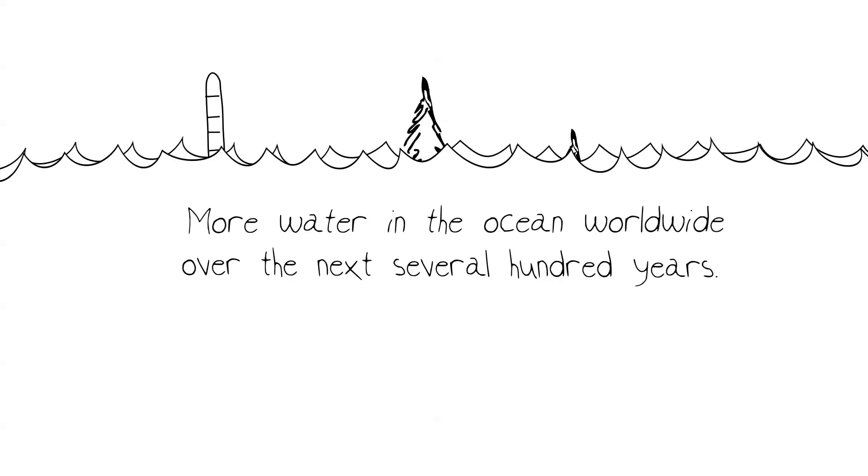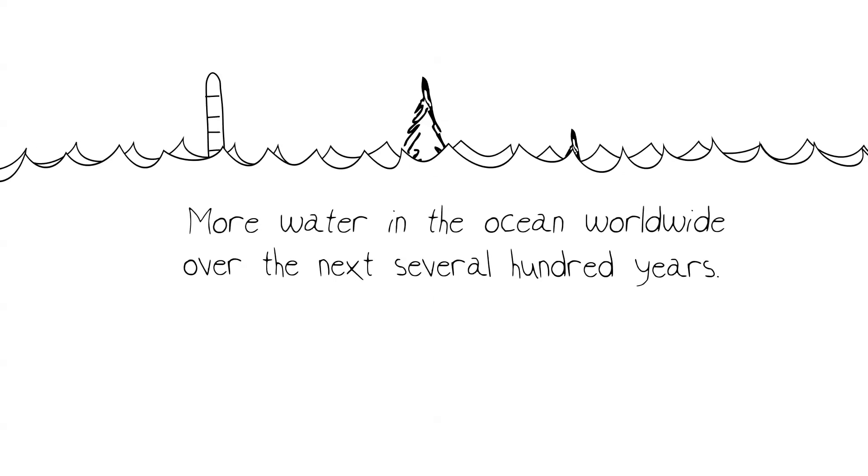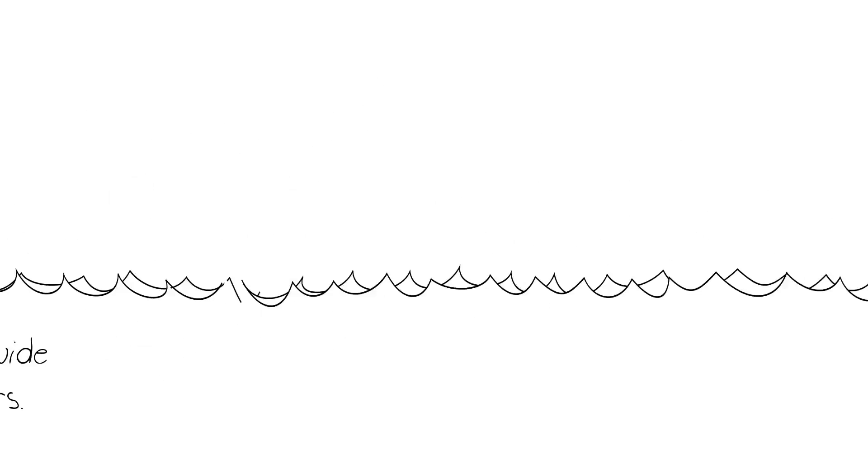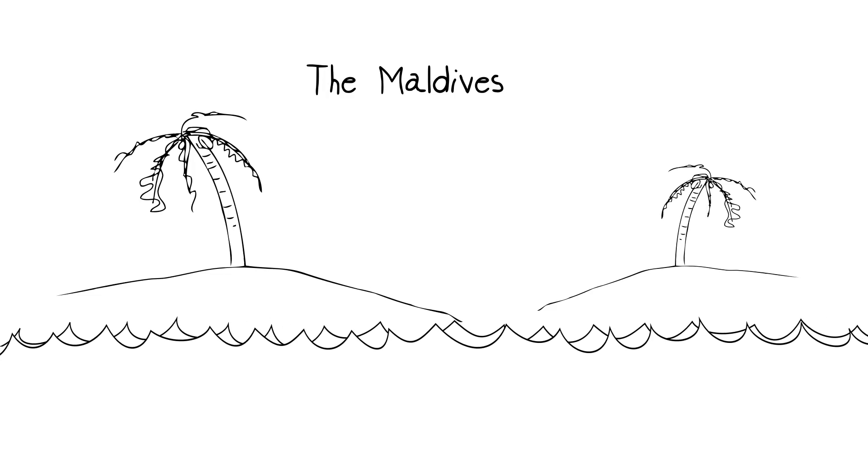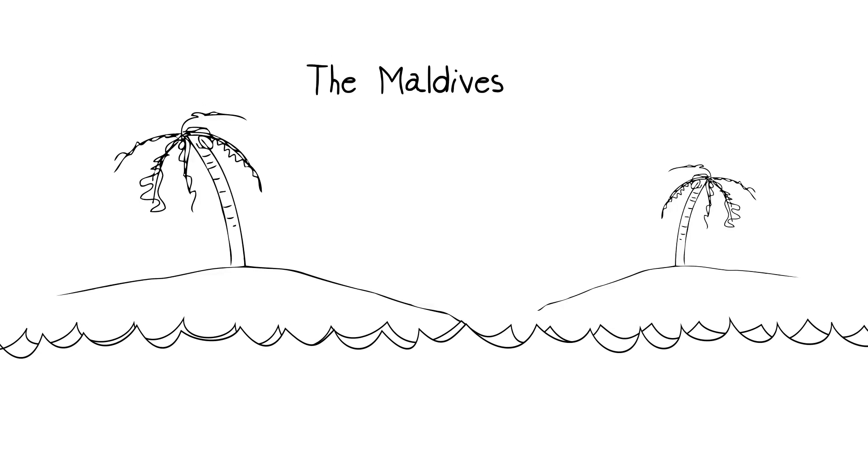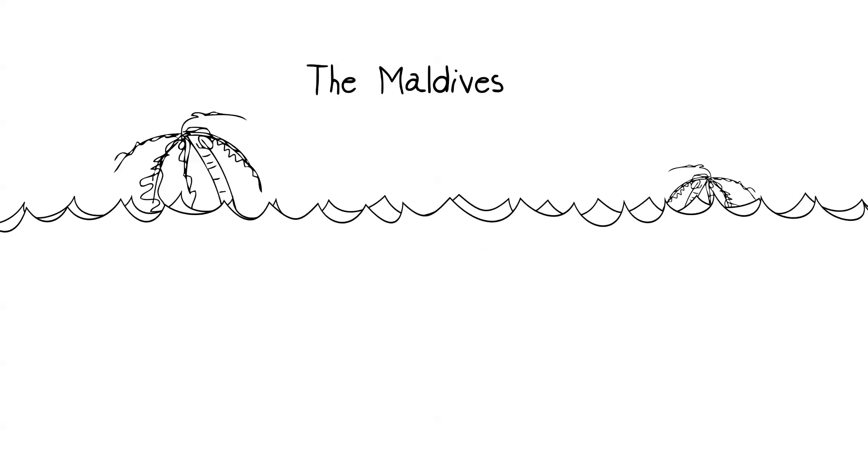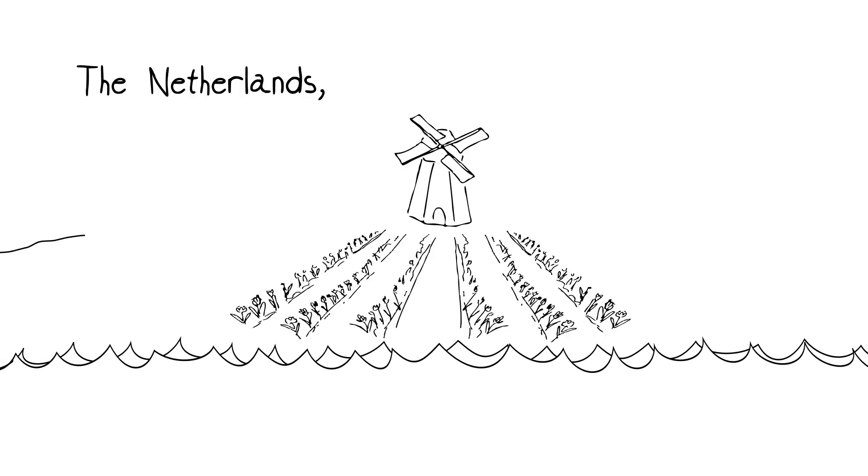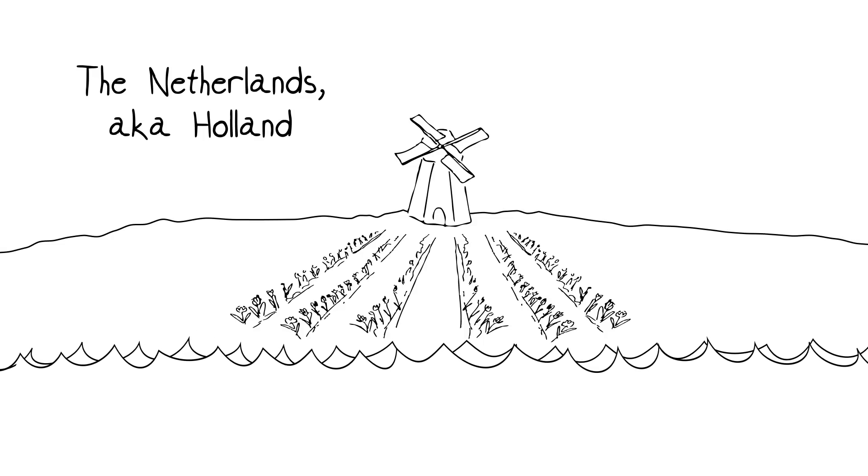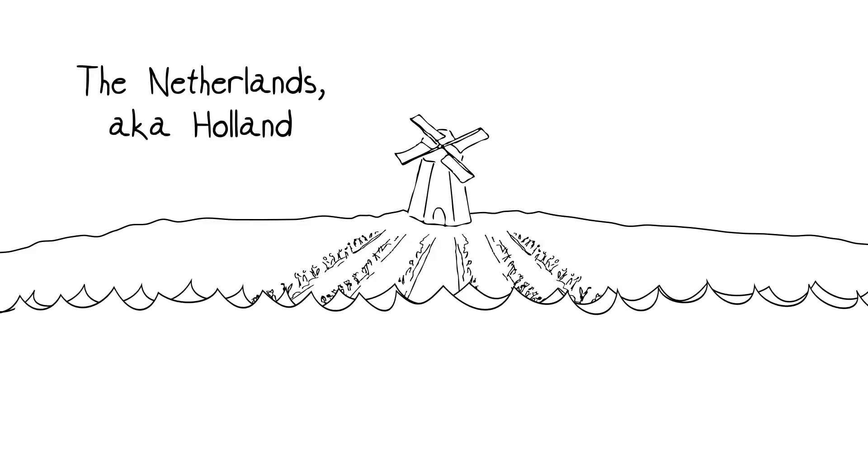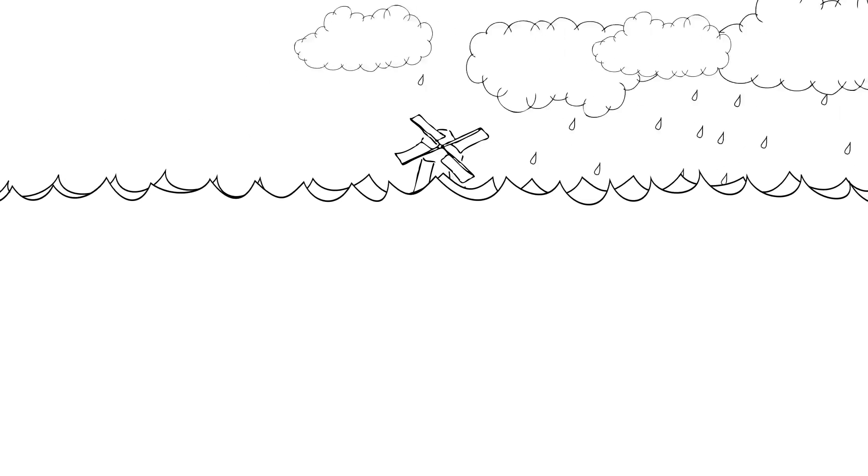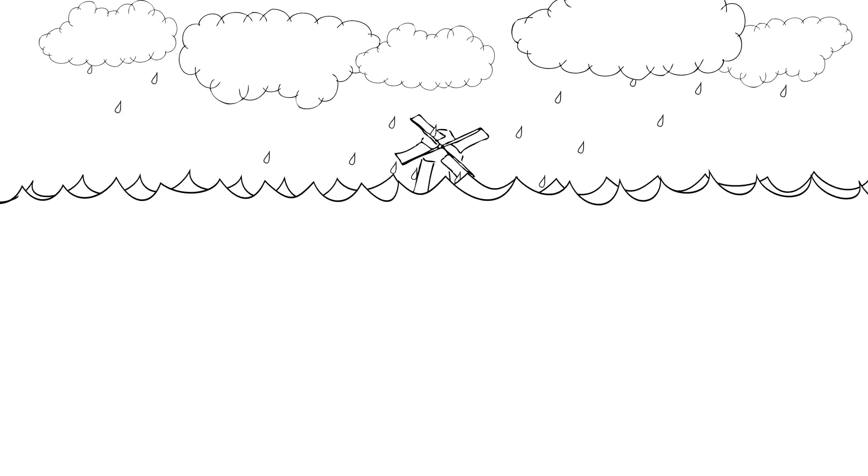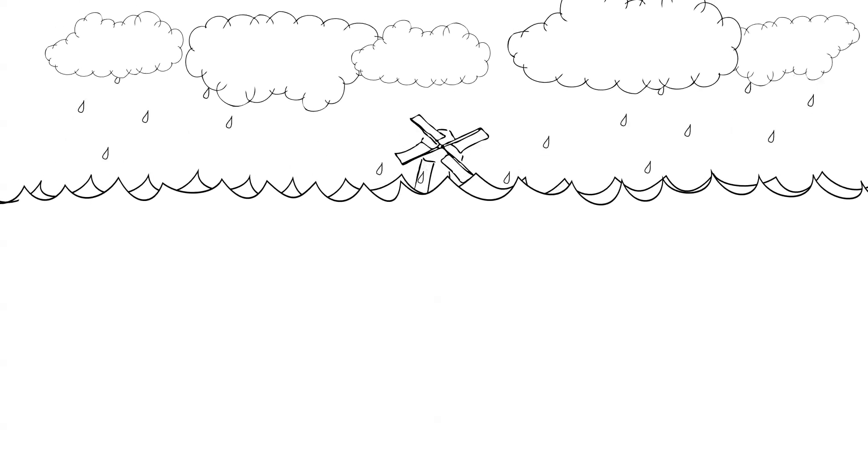People are looking at this very carefully, because if you think about 20 feet, that's enough that entire countries like the Maldives, which exist largely as low-lying atolls in the Indian Ocean, would disappear underwater. Almost any low-lying area, the Netherlands, aka Holland, or New Orleans, would face serious additional flooding threats, and then you add to that things like hurricane and typhoon storm surges, and it's an enormous problem.